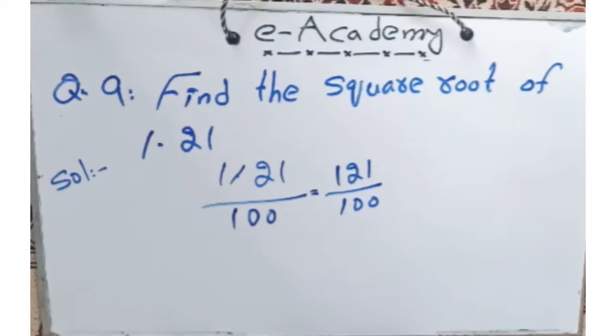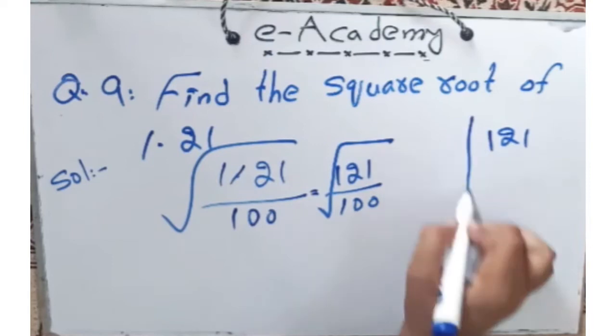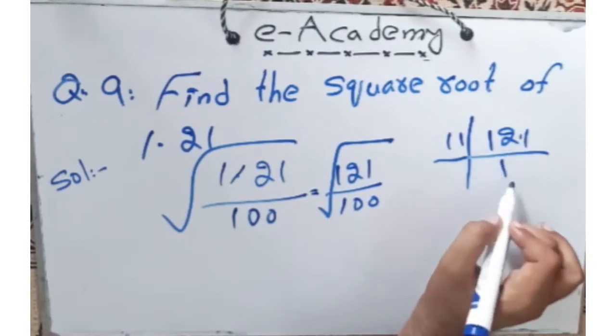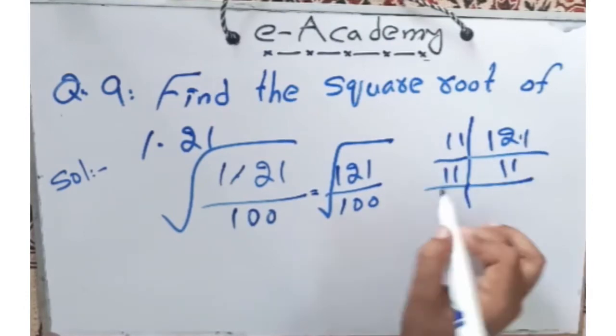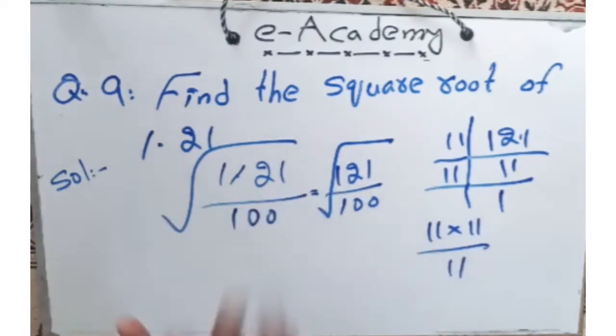If we are going to find the square root of numbers, that will help. 10 times 10 is 100. So 11 times 11 will be 121.